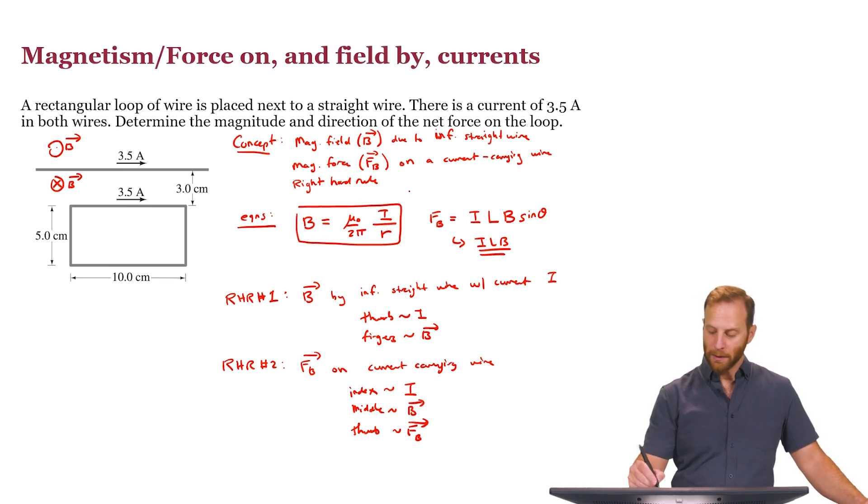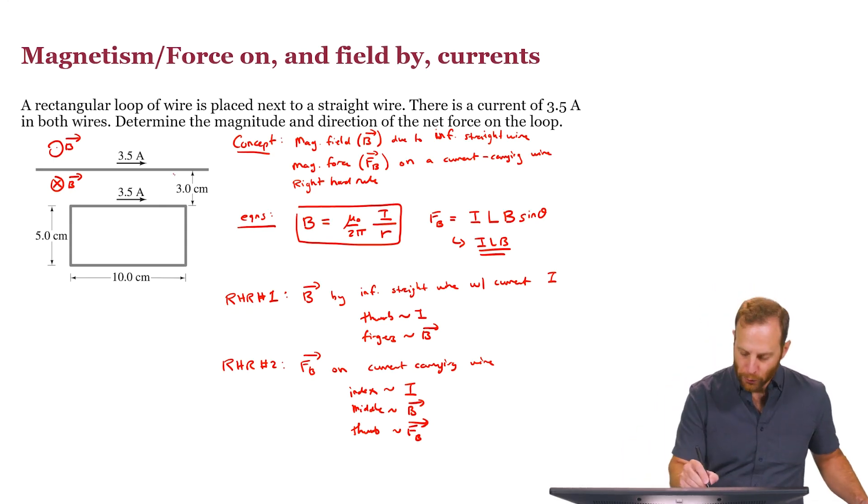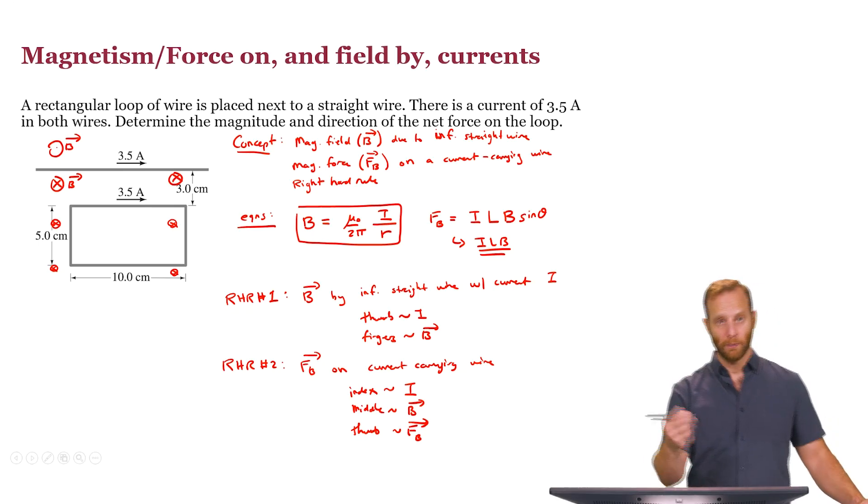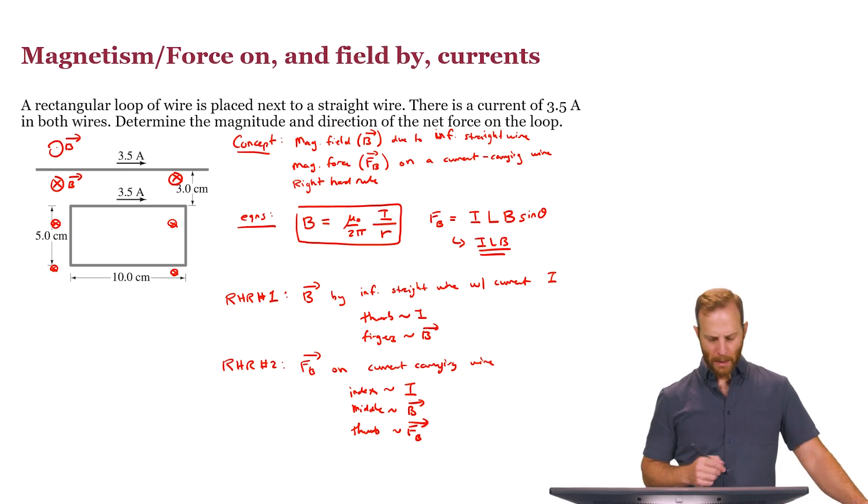And since the magnetic field weakens with distance, that means that what I could do is draw these circles like this, and then draw them slightly smaller farther away, slightly smaller farther away, and so on. So the magnetic field is in fact getting weaker as we move further and further away like that. Now that's telling us about the magnetic field direction.